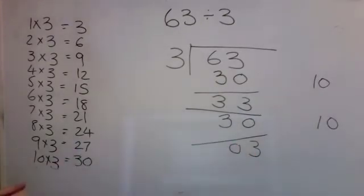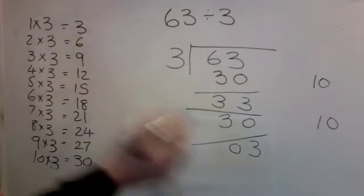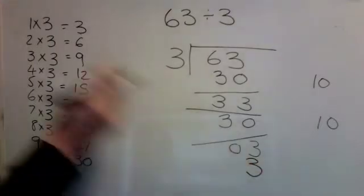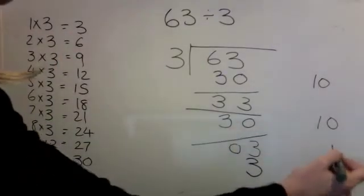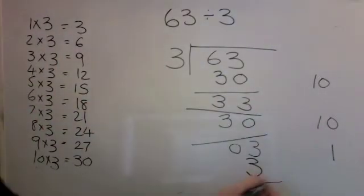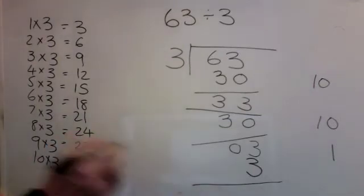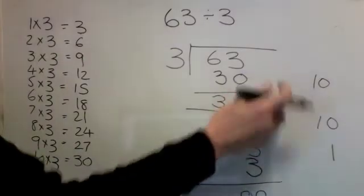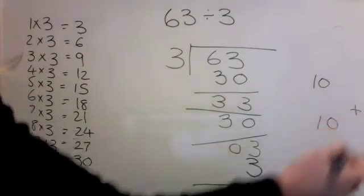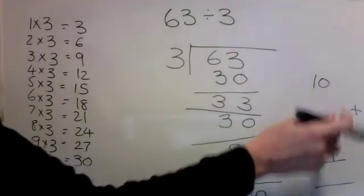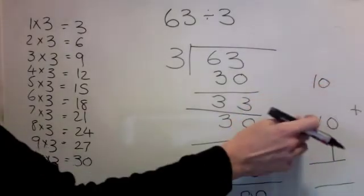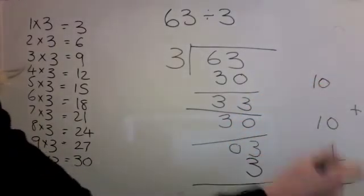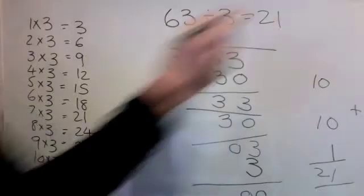That's my new number. I'm looking for a number as close to 3 as possible without going over — and there is the number 3. 1 times 3 is 3. Take it away and see what's left — nothing. I've finished. Add these together: 10 plus 10 plus 1. 10, 20, 21. My answer is 21.